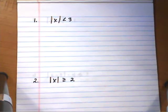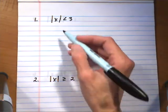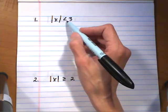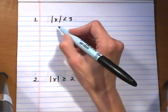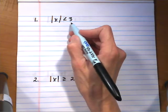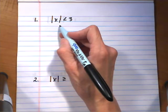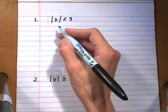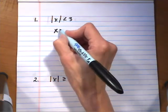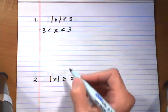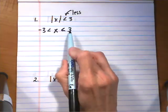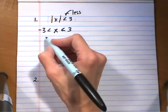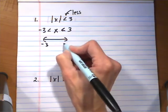The first example on the worksheet: absolute value of x is less than 3. If the absolute value of x is less than 3, that means x must be within 3 of 0, because that's what absolute value means — how far away from 0 are you. So x must be between negative 3 and 3. Every time you have a less than, you get a compound and.